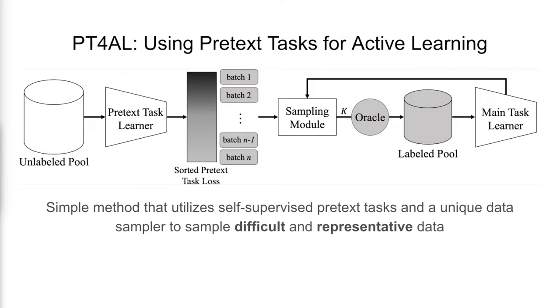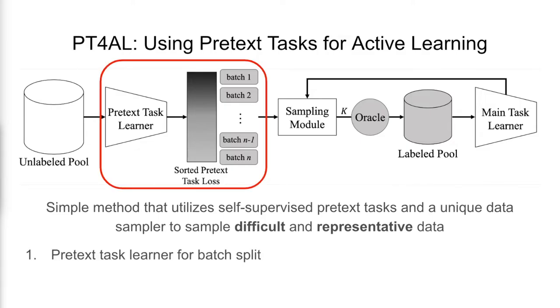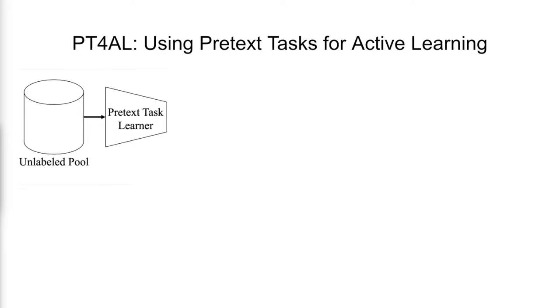There are two main components: the pretext task learner for batch split and the in-batch sampling module. First, the pretext task learner is trained on the unlabeled data. Then, the unlabeled data is sorted in descending order by the pretext task loss. The sorted data is divided into n batches, where n is the number of active learning iterations. The first batch contains data with the highest pretext task loss, while the nth batch contains data with the lowest losses.